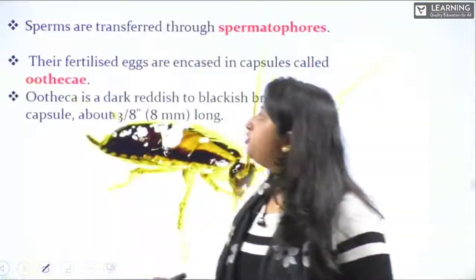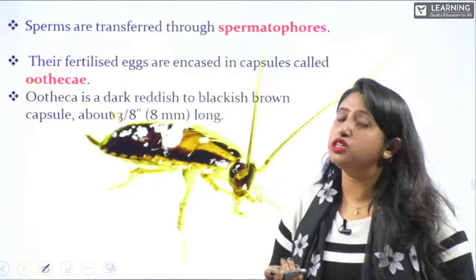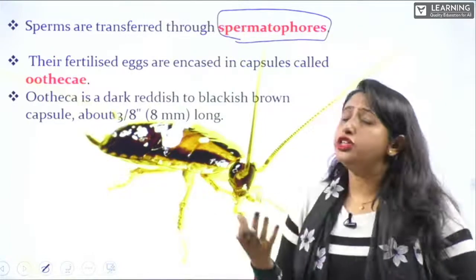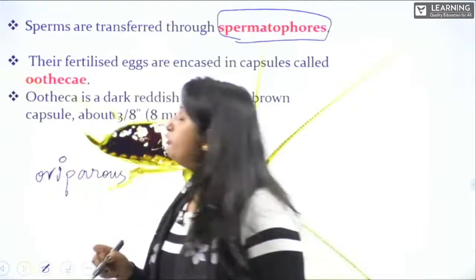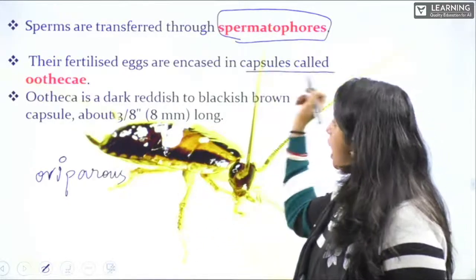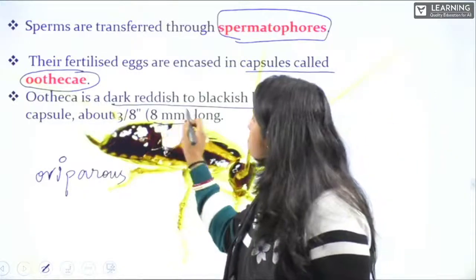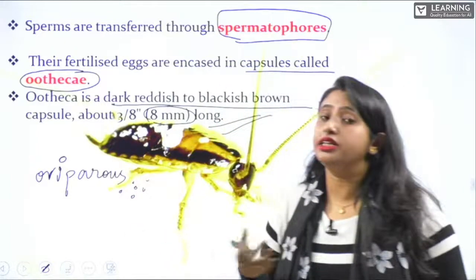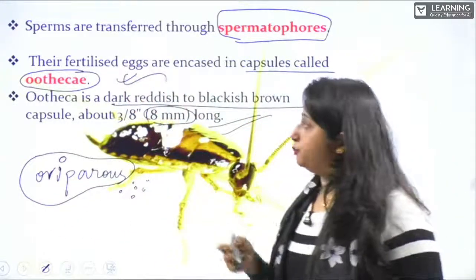The transfer of sperms to the female body takes place through spermatophores. Cockroaches are generally oviparous — the development of eggs takes place outside the body. The fertilized eggs form a capsule called an ootheca, which is dark reddish or blackish-brown in color, measuring about 8 millimeters long.